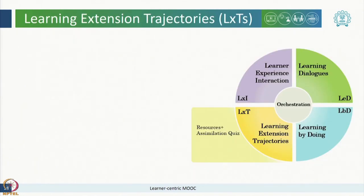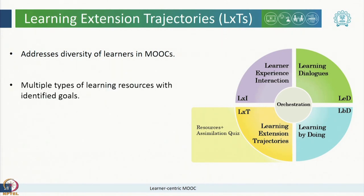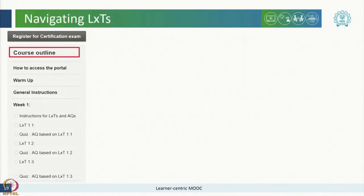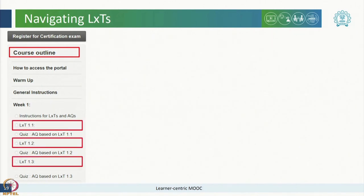Learning extension trajectories or LXTs are mechanisms to address the diversity of learners in a MOOC and their learning needs. LXTs will consist of multiple types of resources such as readings, videos or links with specific identified goals such as ensuring prerequisites or advancing the depth or breadth of your existing knowledge. These LXTs are followed by a graded assimilation quiz also called as AQ to ensure that you have assimilated the key concepts. Where will you find these LXTs? In the course outline panel, you will find a separate unit for the week which will contain all the LXTs for the week.